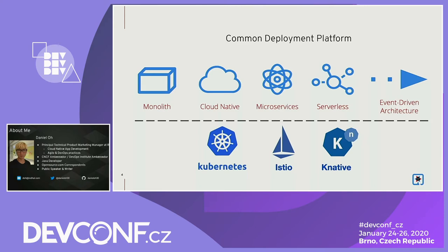All those non-functional capabilities — circuit breaking, fault tolerance, retry — shouldn't be in your business logic. You need to focus on if/else, for loops, and business logic. That's why Istio service mesh handles that instead, for developers. Behind the scenes, the Envoy proxy sidecar runs inside the same pod next to your application container and handles network traffic, logging, metrics, authentication, and circuit breaking.